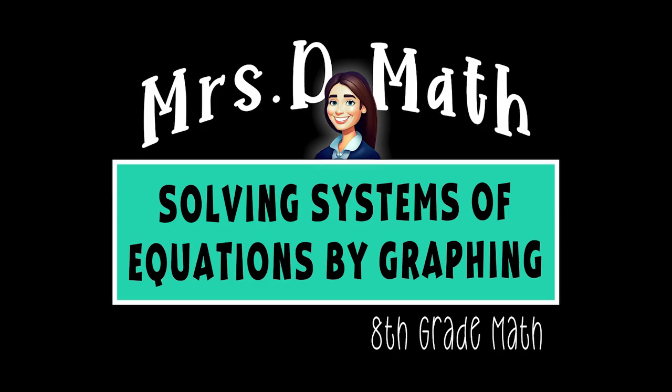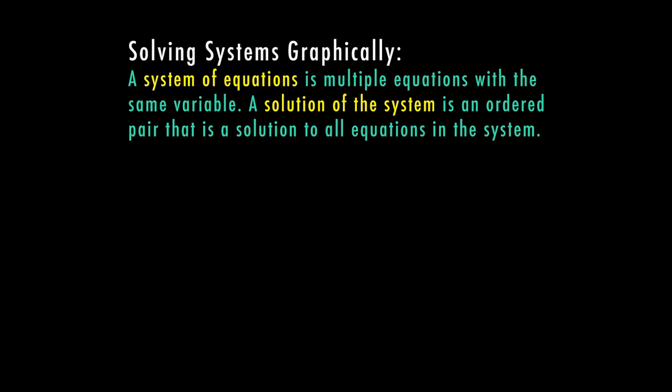Hi, I'm Mrs. D Math. Thanks for joining me today. We're going to go over solving systems of equations by graphing in 8th grade math. A system of equations is multiple equations with the same variables. A solution of the system is an ordered pair that is a solution to all equations in the system. We're going to start out simple with two equations. These two equations make a system because they both have the same variables, y and x.